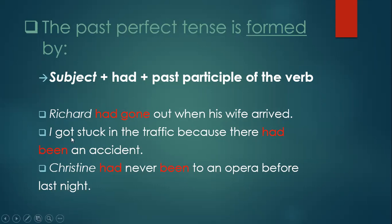Another example: Christine — the subject — had never been. 'Never' is used here because it's negative. So 'had' plus the past participle of the verb. To form the past perfect tense: subject + had + past participle of the verb.